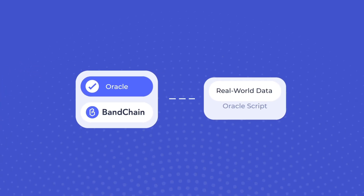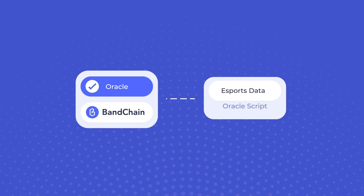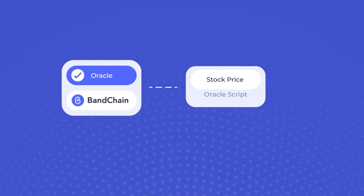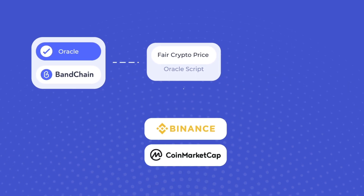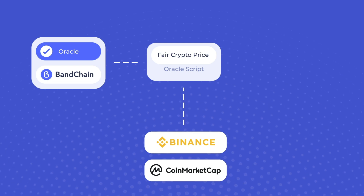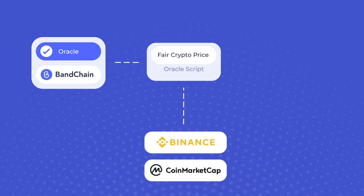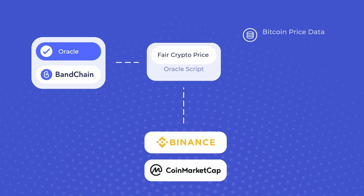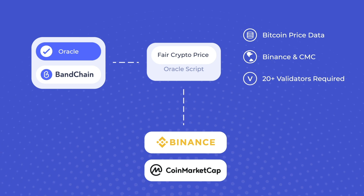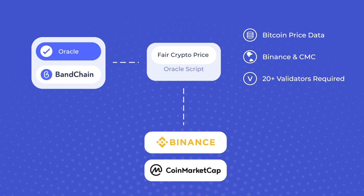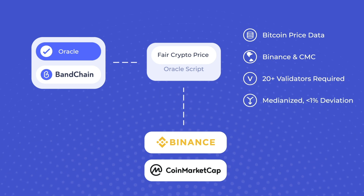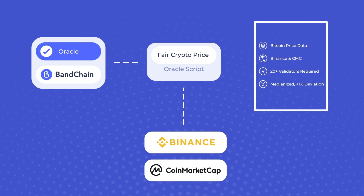With Banned Chain, developers are able to create custom Oracle scripts that connect their smart contracts to any external data source or API. The custom Oracle script specifies the data they need, all the data sources, number of validators required to report such data, and how to aggregate these data into the final result.